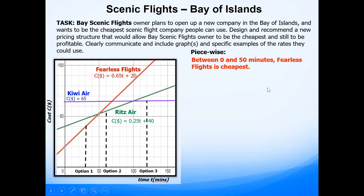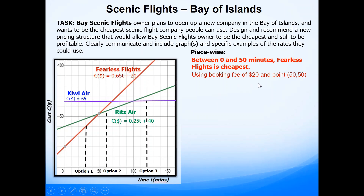Between zero and 50 minutes, Fearless Flights is cheapest with the equation 0.65t + 20, where the y-intercept value is 20. So we'll start at 20 — a reasonable booking fee. To make Bay Scenic cheaper, we know these two lines intersect at a time of 50 minutes with a cost value of $52.50. So if we want to be cheaper, I'll go a little bit less — a cost of $50 will be appropriate. We'll use a booking fee of $20 and the point (50, 50) instead of (50, 52.50) to find the equation for option one.